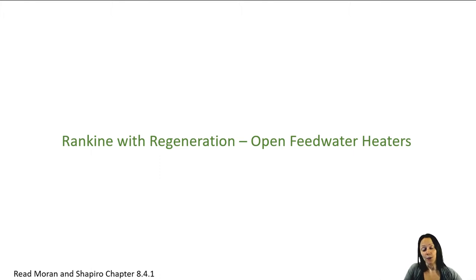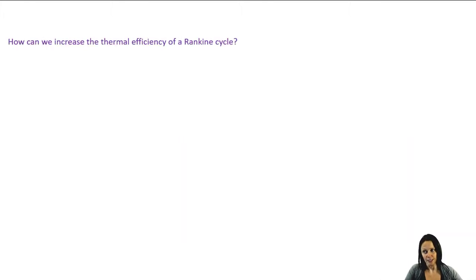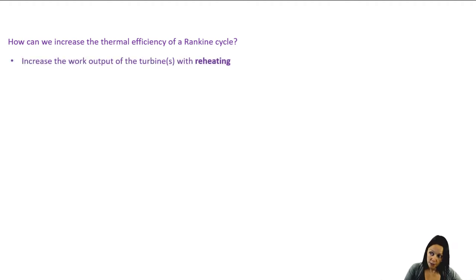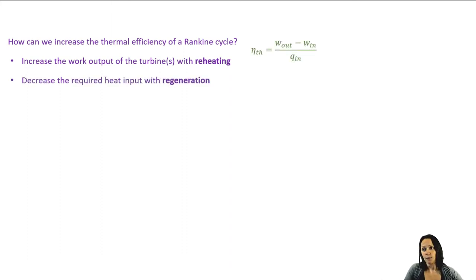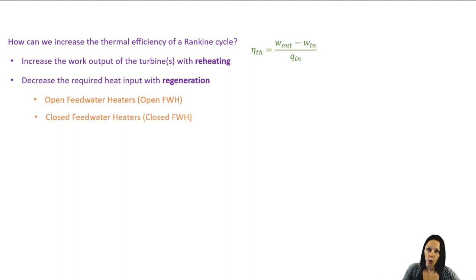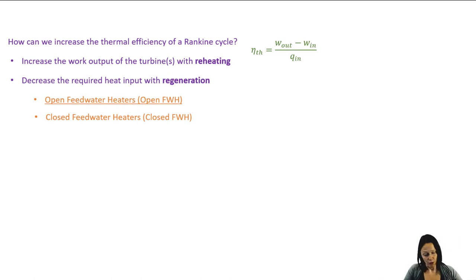In this segment we're going to talk about the Rankine cycle with regeneration with open feedwater heaters. How can we increase the thermal efficiency of our Rankine cycle? We can increase the work output of our turbines using reheating, and we can also use regeneration, which allows us to decrease the required amount of heat we have to put into our cycle. We can do that two ways: with open feedwater heaters and closed feedwater heaters. This segment will be on open feedwater heaters.